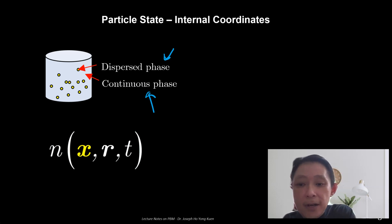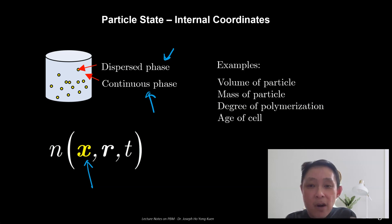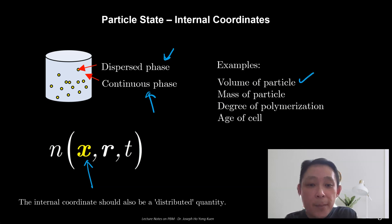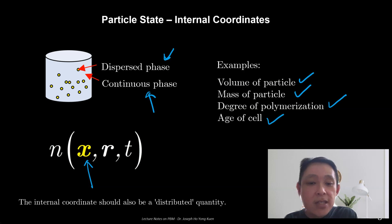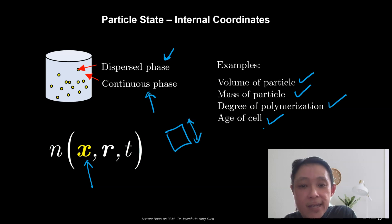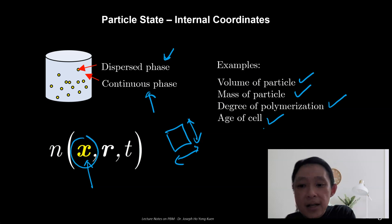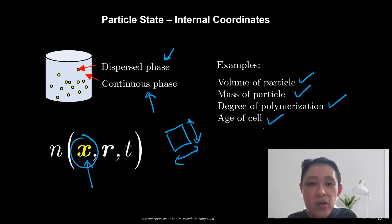The number density function is a function of the internal coordinate, which represents the property of the particle that you are actually interested in. For example, it could be the volume of the particle, the mass of the particle, the degree of polymerization if you are studying a polymer system, or it could represent the edge of a cell. Anything that describes your particle property is given by the internal coordinate. Sometimes the internal coordinate may not just be one dimension — if you can characterize a particle by its length and width, you have a two-dimensional internal coordinate. In general, the internal coordinate x is a vector quantity.